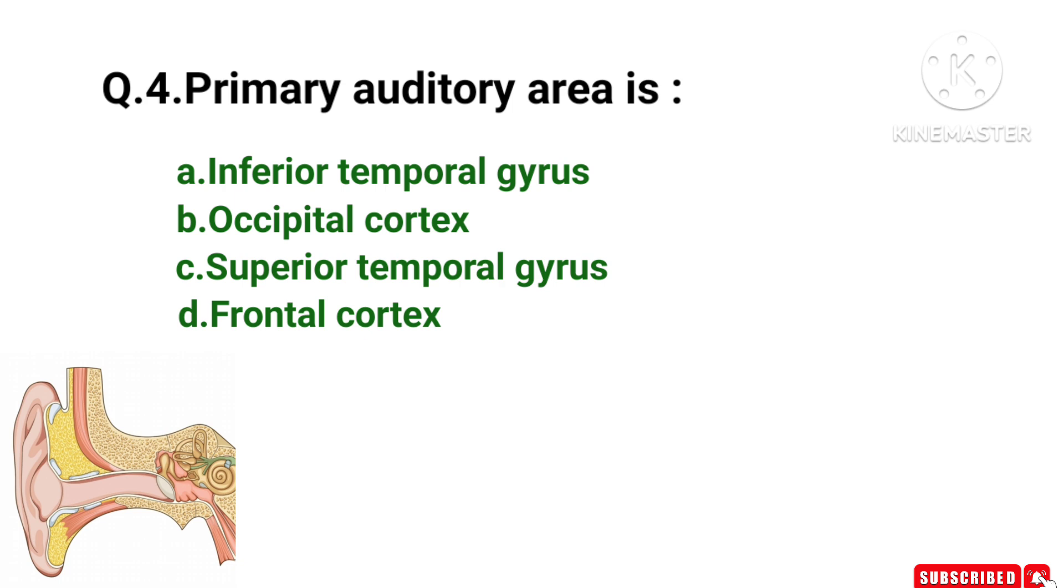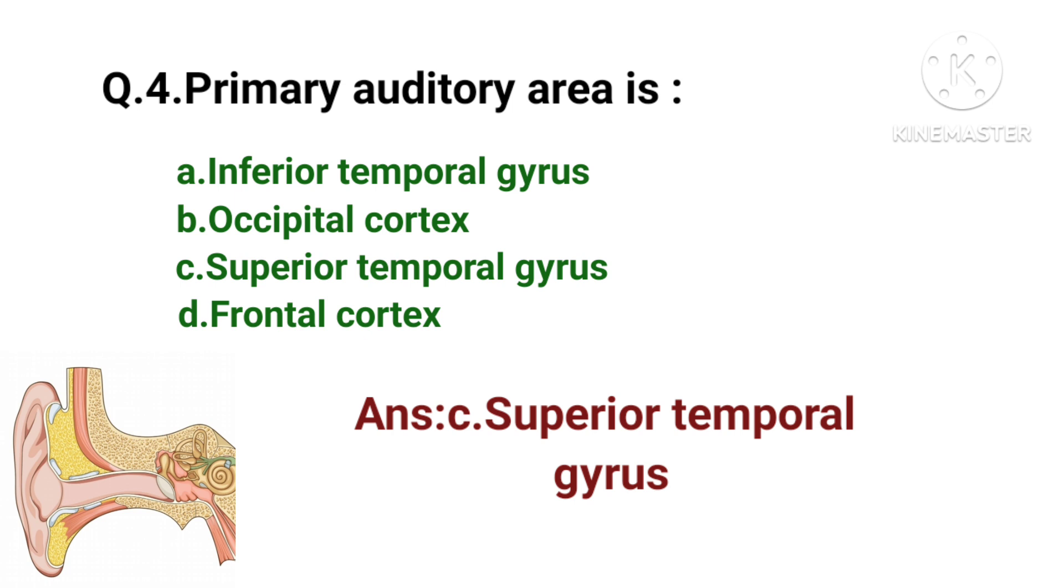Primary auditory area is: inferior temporal gyrus, occipital cortex, superior temporal gyrus, or frontal cortex. Primary auditory area is superior temporal gyrus.